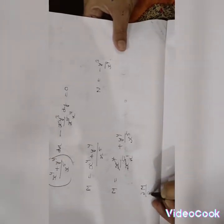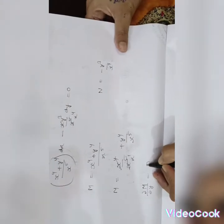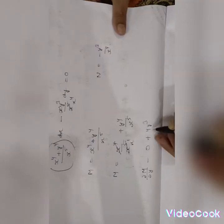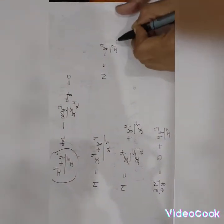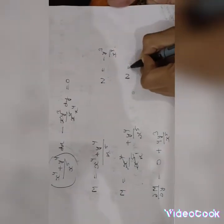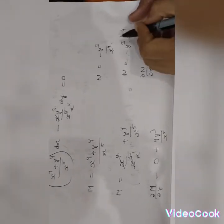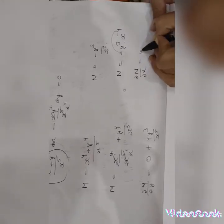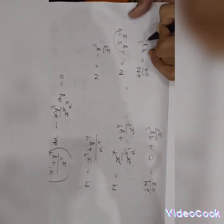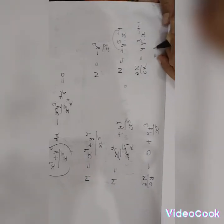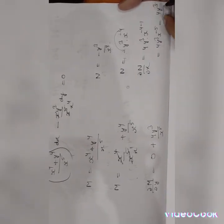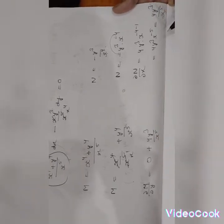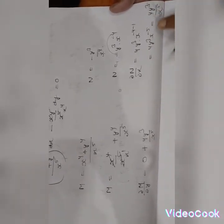After multiplying by 1/x⁵, compute ∂M/∂y: the derivative of 1/x is 0; derivative of y⁴/x⁵ gives 4y³/x⁵. For N = –y³/x⁴, compute ∂N/∂x with y constant: treating x⁻⁴, the derivative gives –(–4)·y³·x⁻⁵ = 4y³/x⁵. Since ∂M/∂y = 4y³/x⁵ = ∂N/∂x, the equation has become an exact differential equation. Now we can find the solution.